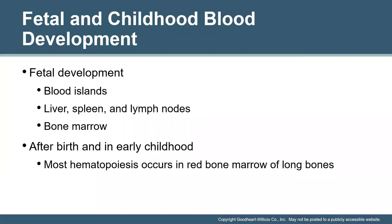At weeks 3 through 8 of fetal development, hematopoiesis occurs in collections of blood cells called blood islands in the yolk sac. These are large nucleated erythrocytes, with a small number of monocytes, macrophages, and megakaryocytes also formed. Around week 12, the site of blood cell formation shifts primarily to the liver, with some formation in the spleen and lymph nodes. At this stage, erythrocytes become adult-type cells without a nucleus. During the fifth month, the bone marrow develops from the mesoderm layer and becomes the main site of hematopoiesis. After birth and during early childhood, the majority of hematopoiesis occurs in the red bone marrow of long bones. As people age, it becomes limited to bones in the pelvis, vertebra, ribs, sternum, skull, and proximal head of the femur and humerus.